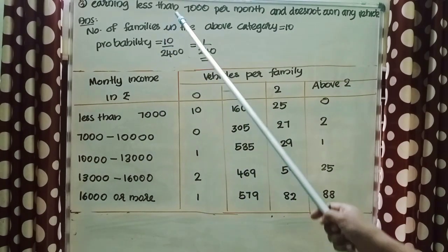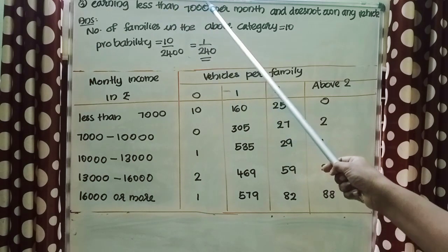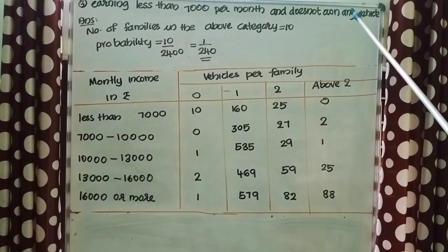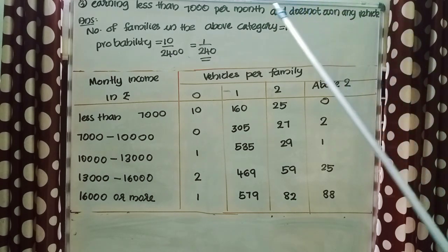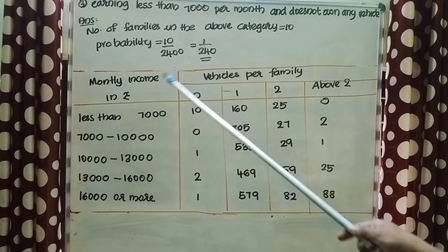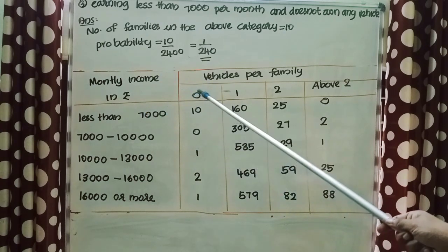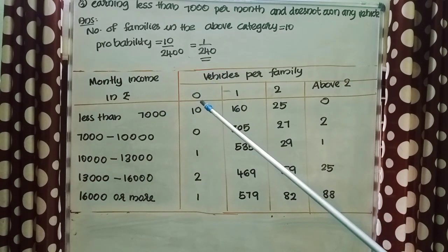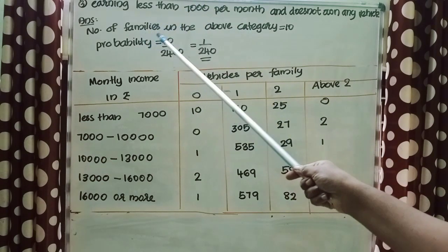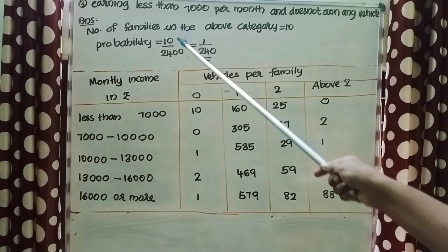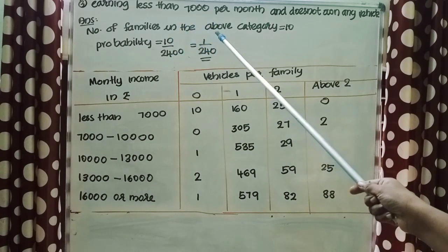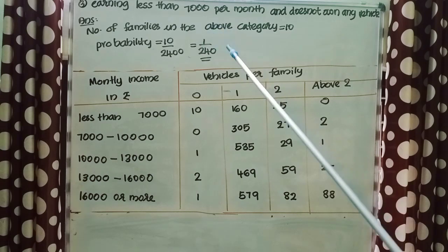Next question: probability of a family earning less than 7,000 per month and not owning any vehicle. Number of families earning less than 7,000 and owning no vehicle = 10. So probability = 10/2,400, which simplifies to 1/240.